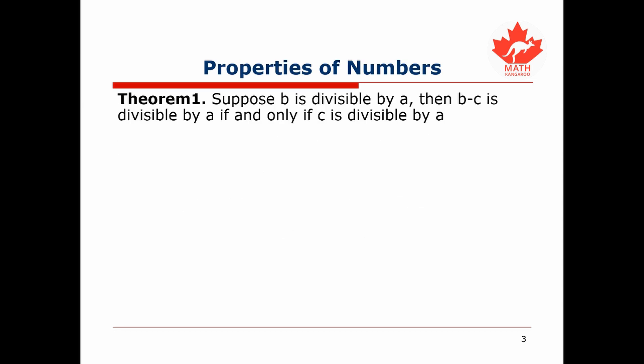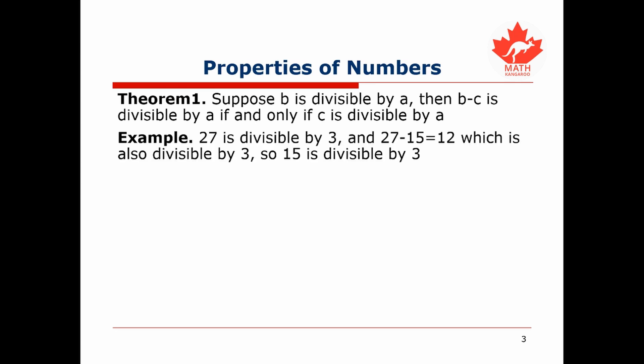A theorem related to divisibility states that if we have an integer b that is divisible by a, then b minus c is divisible by a if and only if c is divisible by a. For example, 27 is divisible by 3, and 27 minus 15 is 12, which is also divisible by 3, so we know that 15 is divisible by 3 as well. This is a toy example since 15 is 3 times 5, but it illustrates the theorem.